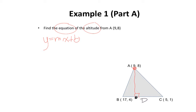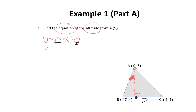Before we can create an equation for this altitude, we need two pieces of information: the slope of this altitude and the y-intercept. We can't calculate the slope of AD directly, because the slope equation requires the coordinates of two points. We have the coordinate of A, but we do not have the coordinates of D. Therefore, we can't figure out the slope directly — we're going to have to do it indirectly. Remember, line segment AD is perpendicular to BC. Therefore, these two slopes will be negative reciprocals.